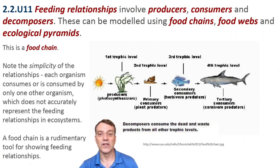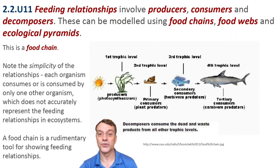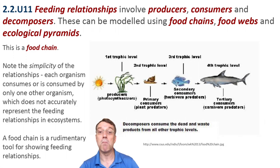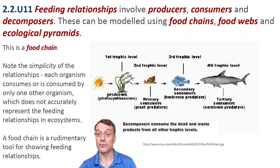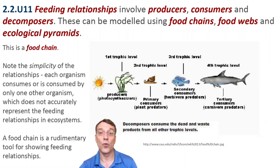Feeding relationships in ecosystems involve producers, consumers, and decomposers. These relationships can be modeled using food chains, food webs, and ecological pyramids. Each approach offers different insights into ecosystem structures and the way those ecosystems work.